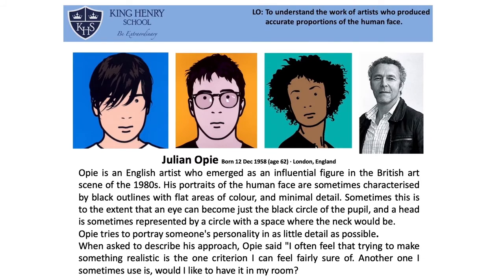The next artist we're going to look at is Julian Opie. I think quite a lot of you will like his style — it's very cartoony, very basic, and looks very appealing. I really like the colors; it's very graphic. Julian Opie is an English artist whose portraits of the human face are characterized by black outlines with flat areas of color and minimal detail. The eye can become just a little black circle for the pupil, and the head is sometimes represented by a circle with a space where the neck would be — very minimal and simple. This is another artist you can consider writing about in your fact sheet.